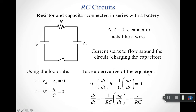The voltage across the capacitor comes from the fundamental capacitor equation q equals CV, solved for V. Taking the derivative of the loop equation with respect to time: the battery voltage is constant so that term becomes zero, resistance is fixed giving R times dI/dt, and capacitance is constant so we pull out 1/C, leaving dq/dt. Rearranging gives dI/dt equals negative (1/RC) times dq/dt. Since dq/dt is just the current I, we get dI/dt equals negative I over RC.